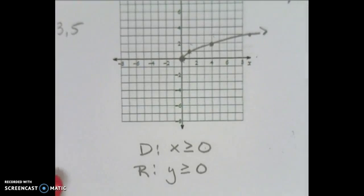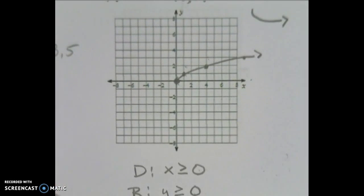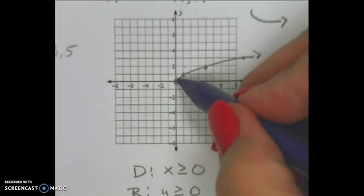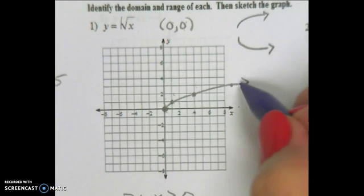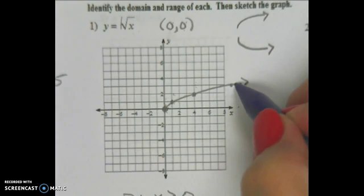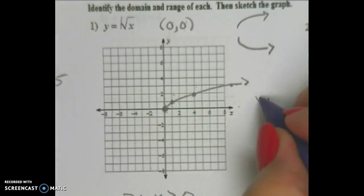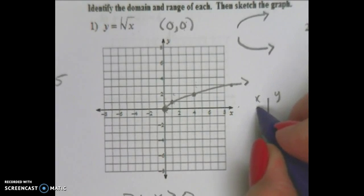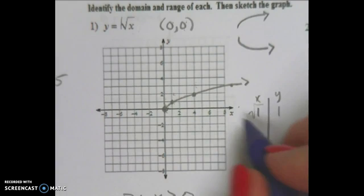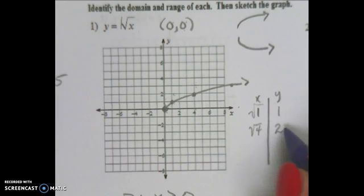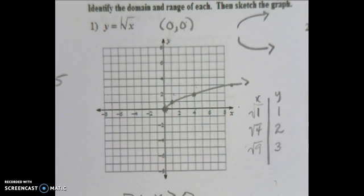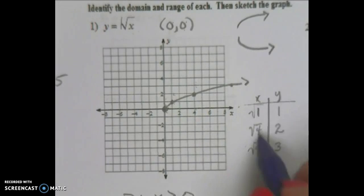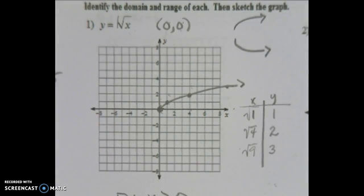0, 0 is also the starting point for my domain and range. I'll start at 0, 0, put my dot right at the center, going up 1 and over 1, up 1 over 3, up 1 over 5. If I plug in these values you'll see that they work: the square root of 1 is 1; if I plug in 4, the square root of 4 is 2; if I plug in 9, the square root of 9 is 3. You can use a table of values and plug it in, or we can use our step function to sketch it.